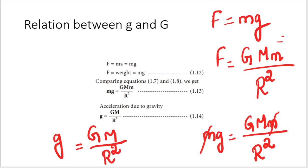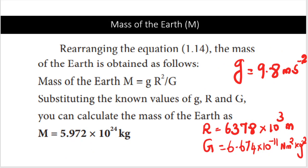So g equals GM divided by R squared. Here, g is the acceleration due to gravity, capital G is the gravitational constant, capital M is the mass of the earth, and capital R is the radius of the earth. From this, we can find the mass of the earth.